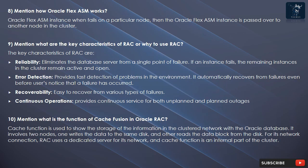Question 10: What is the function of cache fusion in Oracle RAC? Cache fusion is used to show the storage of information in the clustered network with the Oracle database. It involves two nodes — one writes the data to the same disk, and the other reads the data block from the disk. For its network connection, RAC uses a dedicated server, and cache fusion is an internal part of the cluster.